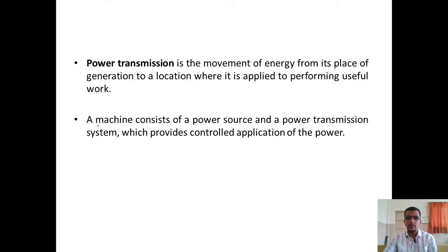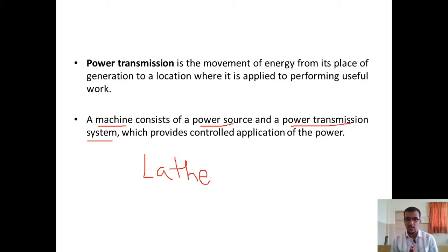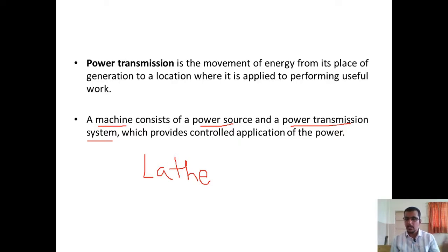When it comes to mechanical means, consider the example of a machine. A machine consists of both a power source and a power transmission system or mechanisms that provide the controlled application of power. For example, in a lathe machine, the source of power is the motor driven by electric power, producing rotation. That mechanical power is then transmitted to various parts of the lathe using gear drives, lead screws, etc.